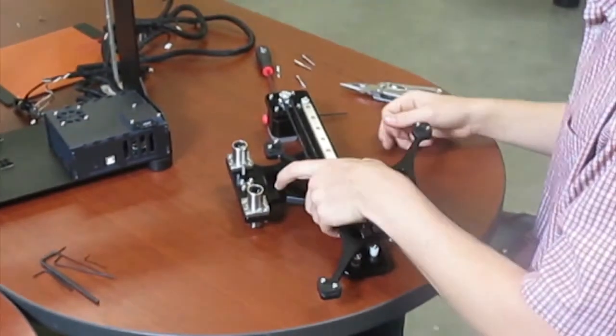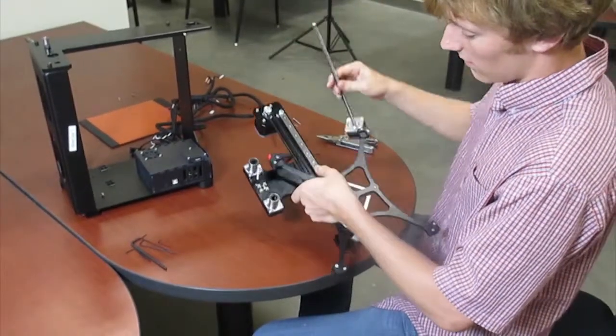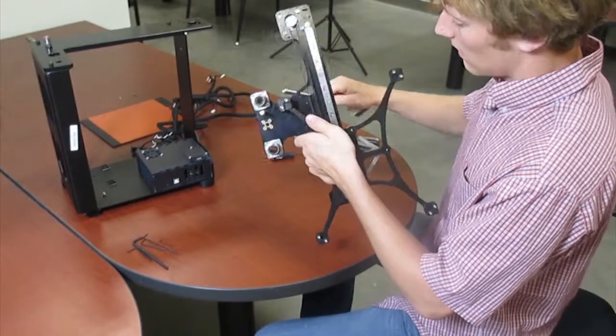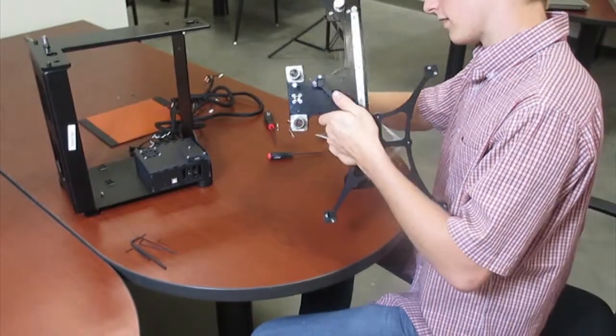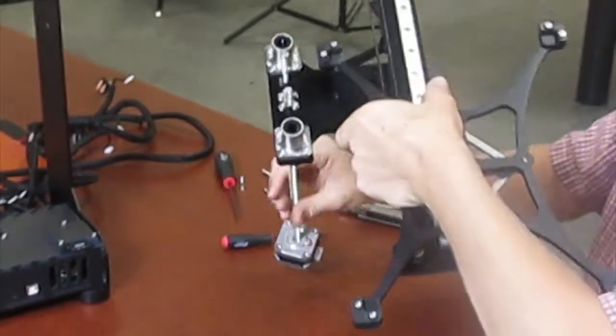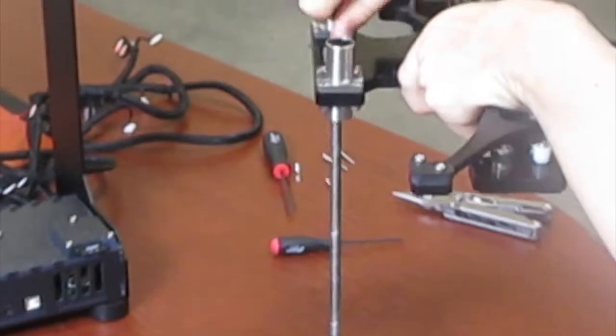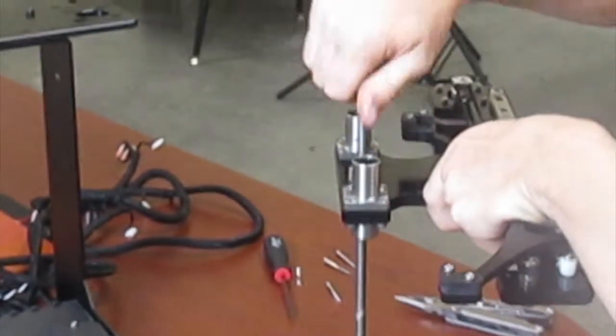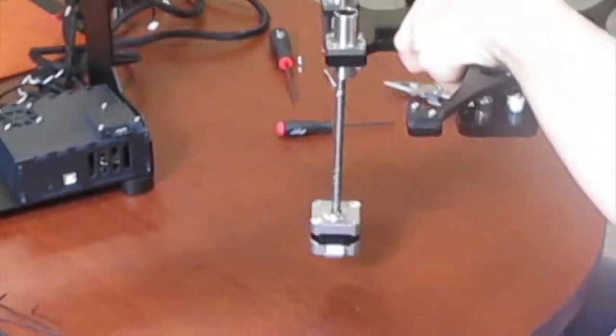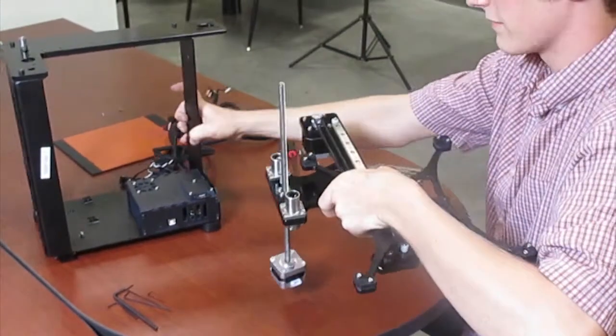After doing this, we are going to install the z-axis threaded rod with the motor onto the z-platform. This will go through the z-axis screw holder we have mounted earlier. Get it in and rotate it through. Once you have it in, it's easier to grab it from the top to spin it through. After you have it about halfway through, it's time to mount it in the machine.